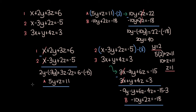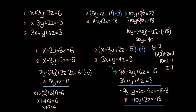Let's use equation 1. We know x plus 2 times 2 plus 3 times 1 equals 6, so x plus 4 plus 3 equals 6, meaning x plus 7 equals 6. Subtracting 7 from both sides gives x equals negative 1. The ordered triplet x, y, z that satisfies these three equations is negative 1, 2, 1.